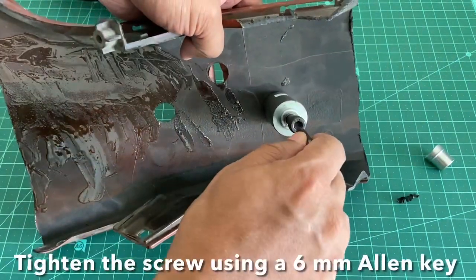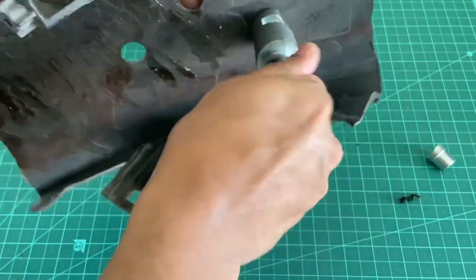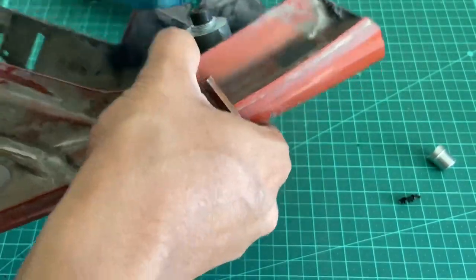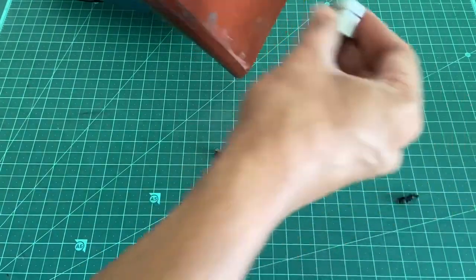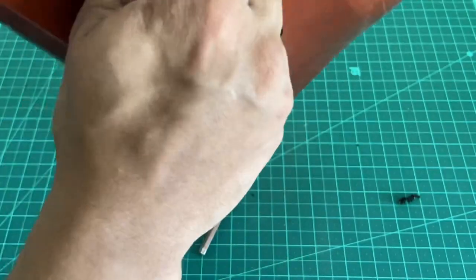Once you've tightened it from the rear side, from this side, thread it by hand and tighten it. Essentially you are manually cutting the holes, so it will need a little bit of elbow grease.